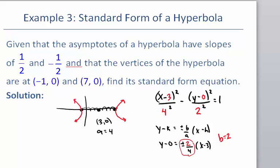We can now simplify the equation. For our final equation we would have: x minus 3 squared over 16, minus — and y minus 0 just becomes y squared — over 4, equals 1.